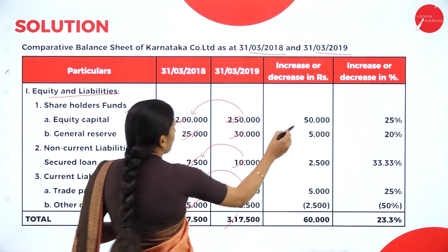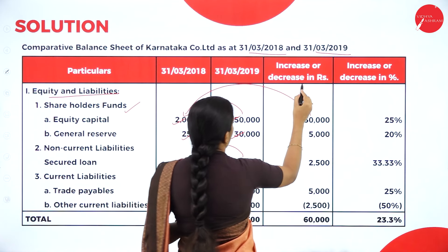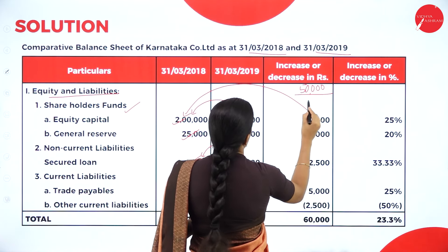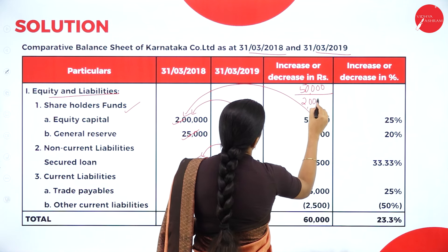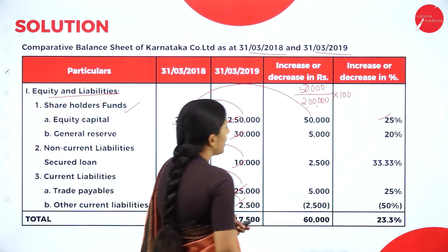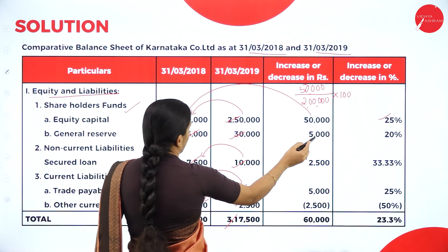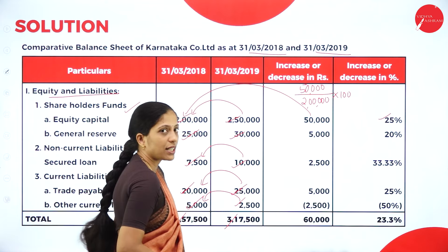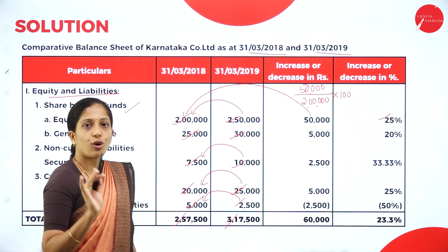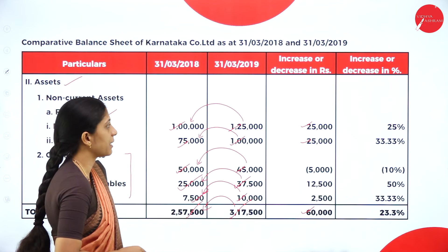For the fourth column: 50,000 divided by 2,00,000 into 100 — that is, the third column amount divided by the first column (2,00,000) into 100, giving the percentage. In the same way for everything. For the second item: 5,000 divided by 25,000 into 100 = 20%. So continue till the end in the same way. Hope you are clear about the calculation for comparative statement.